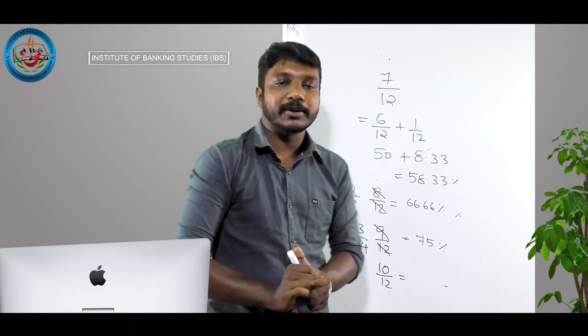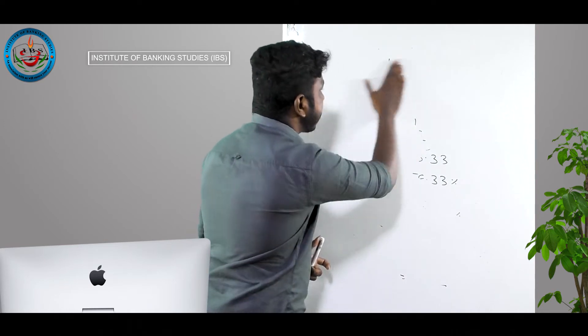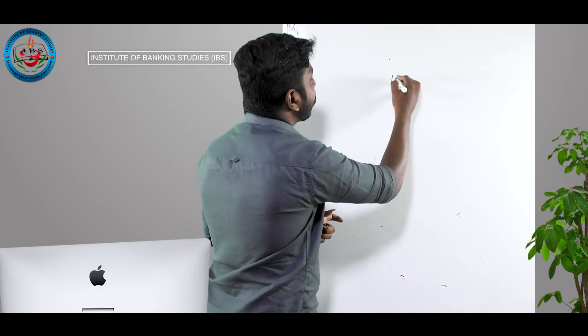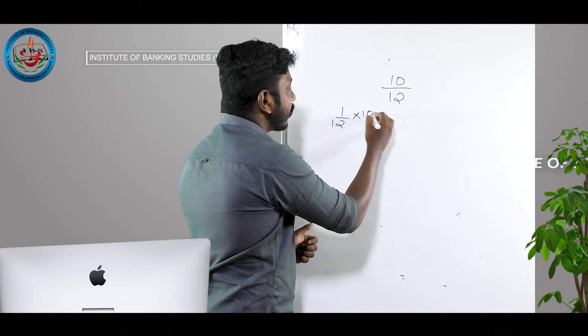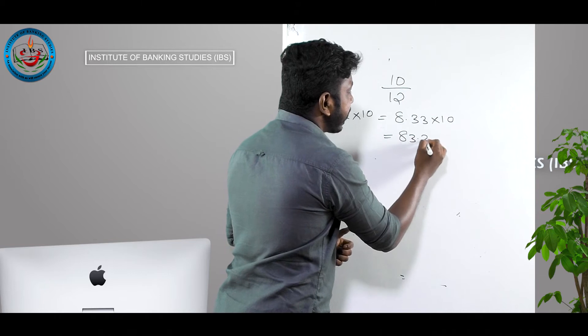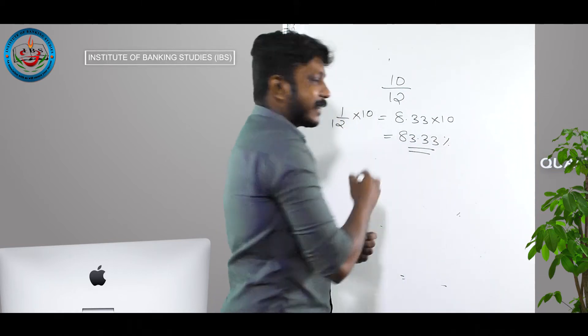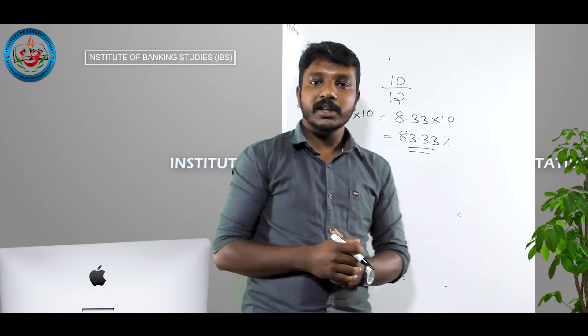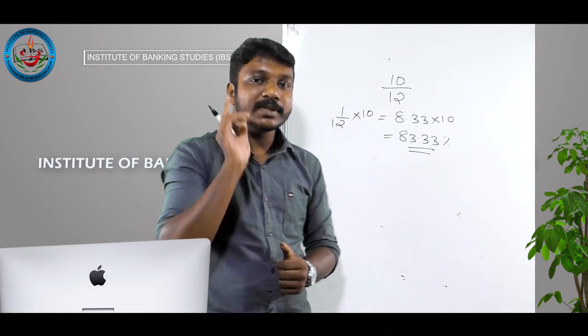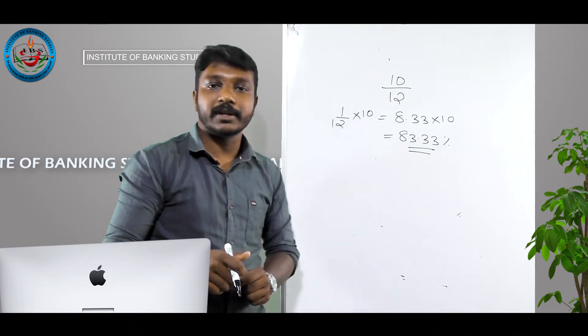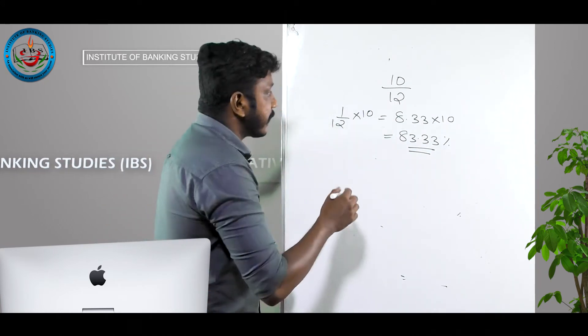For 10/12, it is related to 1/12. So 1/12 × 10 means 8.33 × 10 = 83.33%. So 10/12 is 83.33%. When we discuss the percentage table of 6, we will also see that 5/6 is 83.33%.